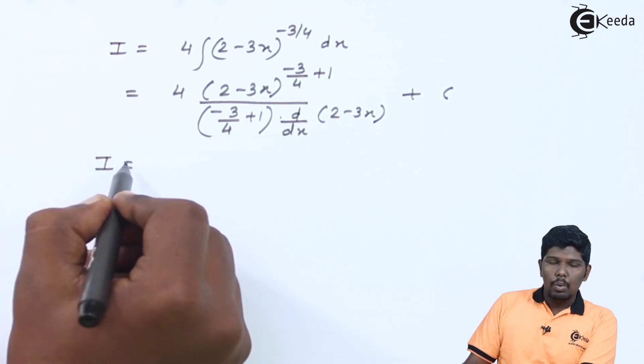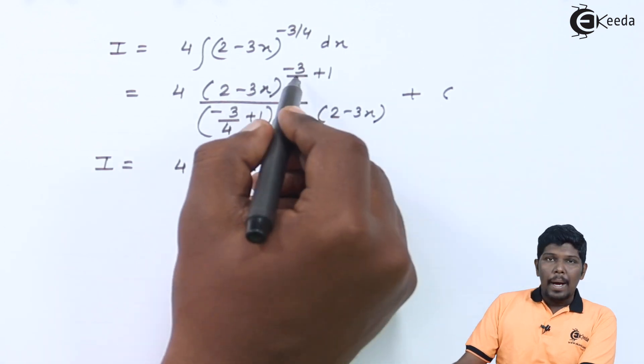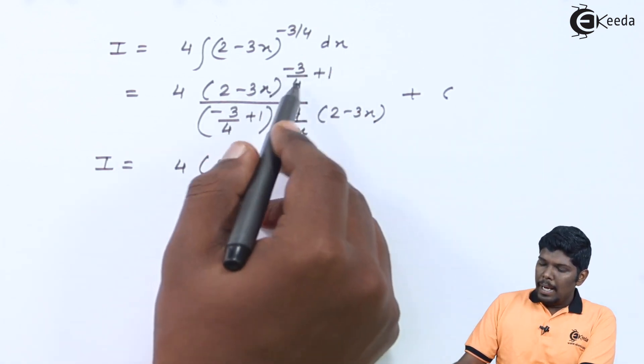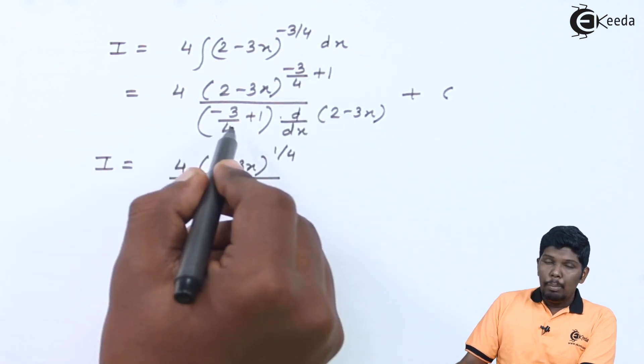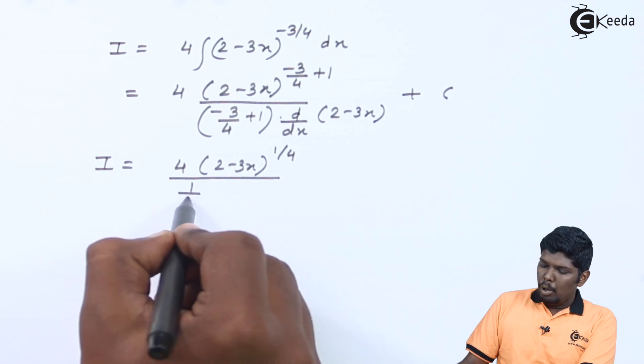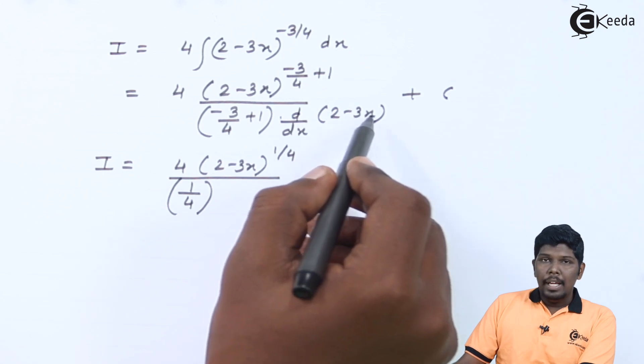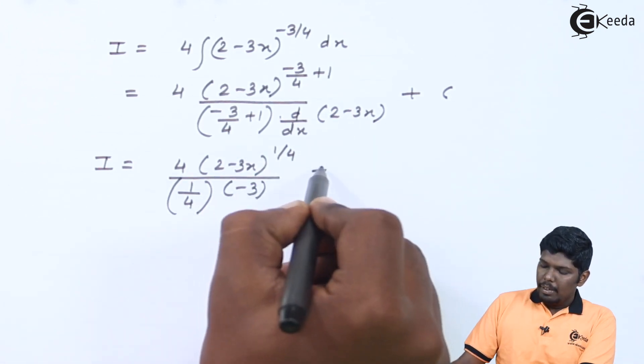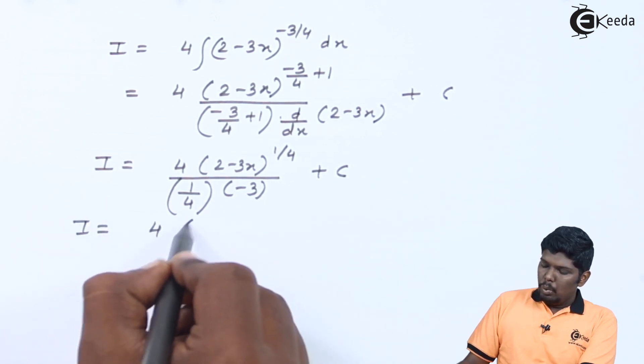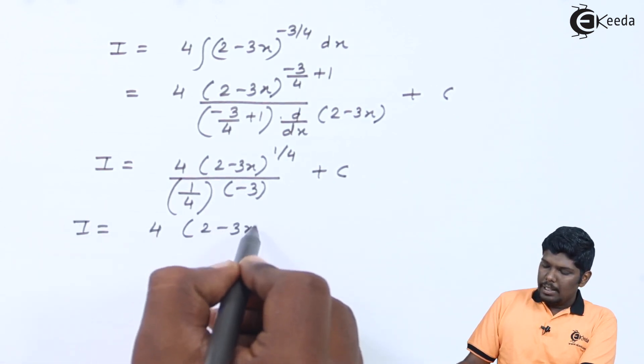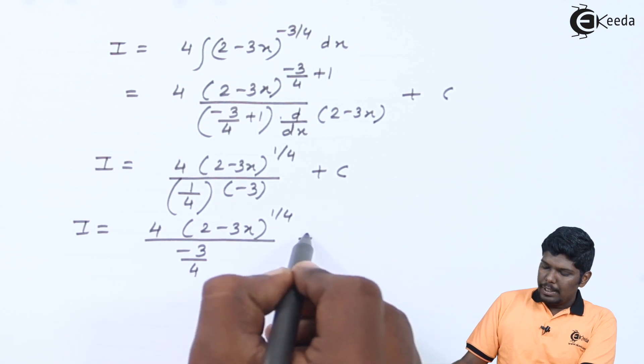Further we have I equals 4 times (2-3x) -3/4+1 will give you -3+4, that is +1 upon 4. In the denominator also we have 1 upon 4 times the derivative of 2 will be 0 and -3x derivative will be -3, +C. This will give you 4 times (2-3x) raised to 1/4 in the denominator, we have -3/4 +C.